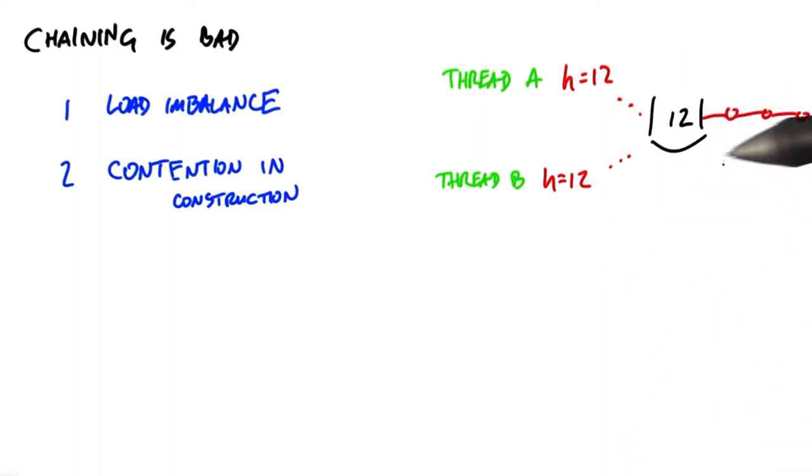These two items want to simultaneously manipulate the linked list in the same bucket. To do that, they're going to have to serialize and synchronize. Only one of them can update the bucket at any given time, and the other must wait its turn.